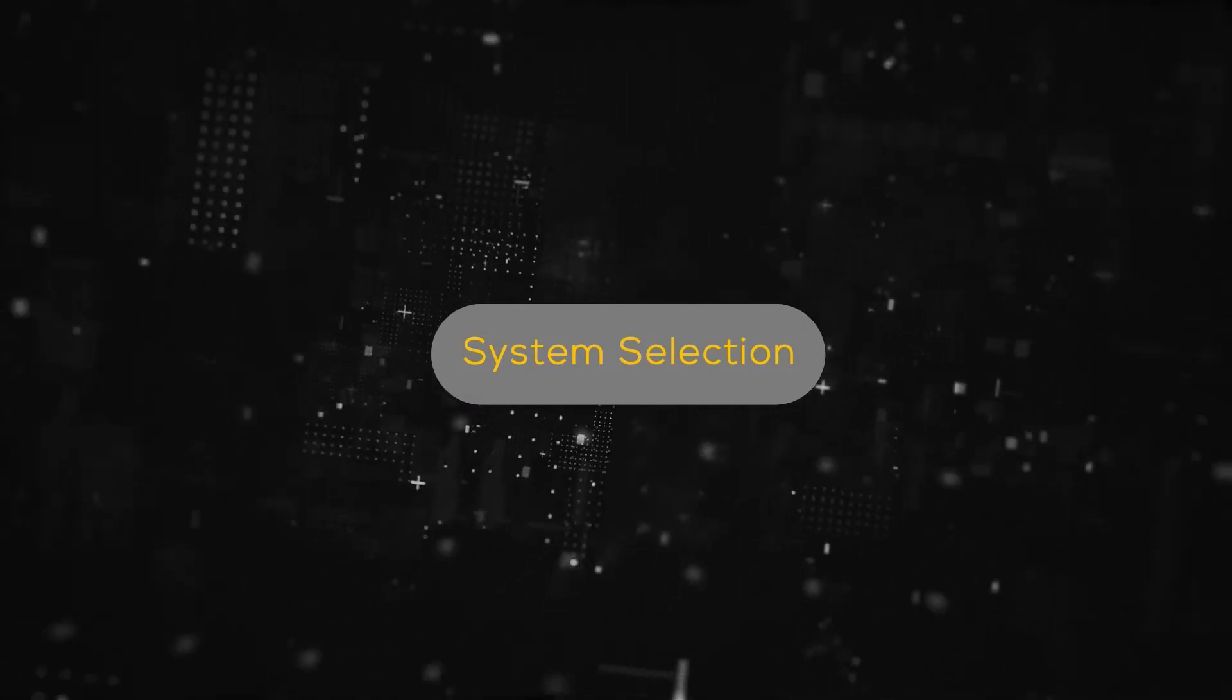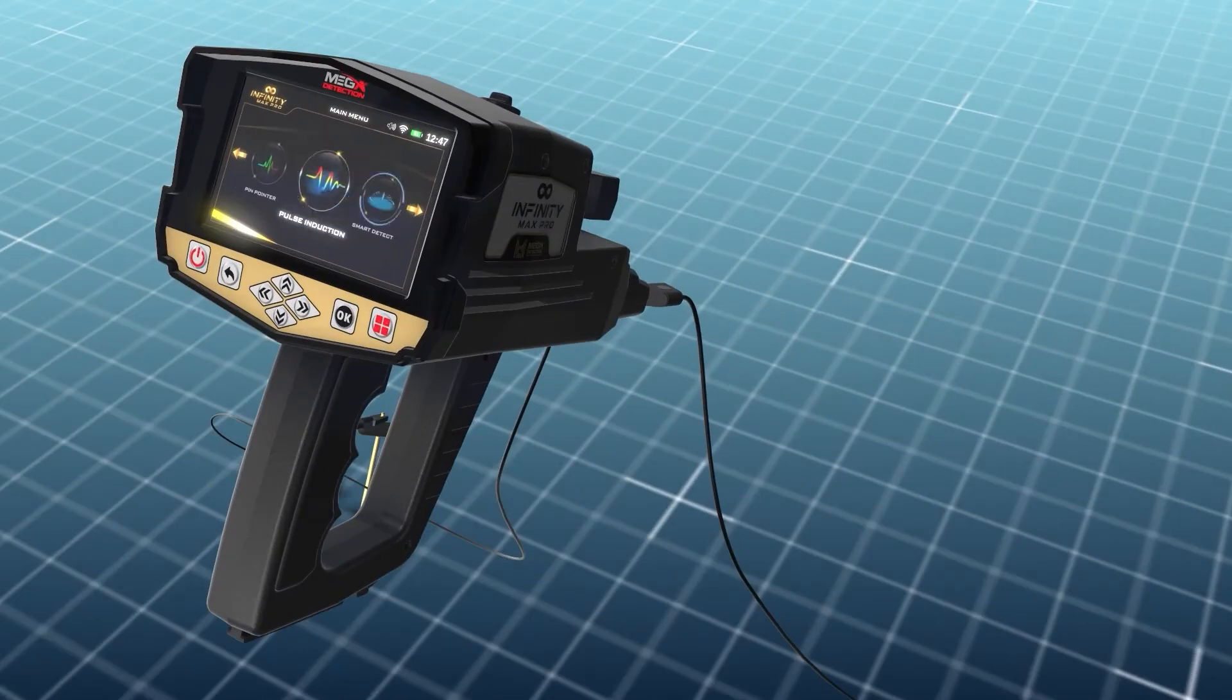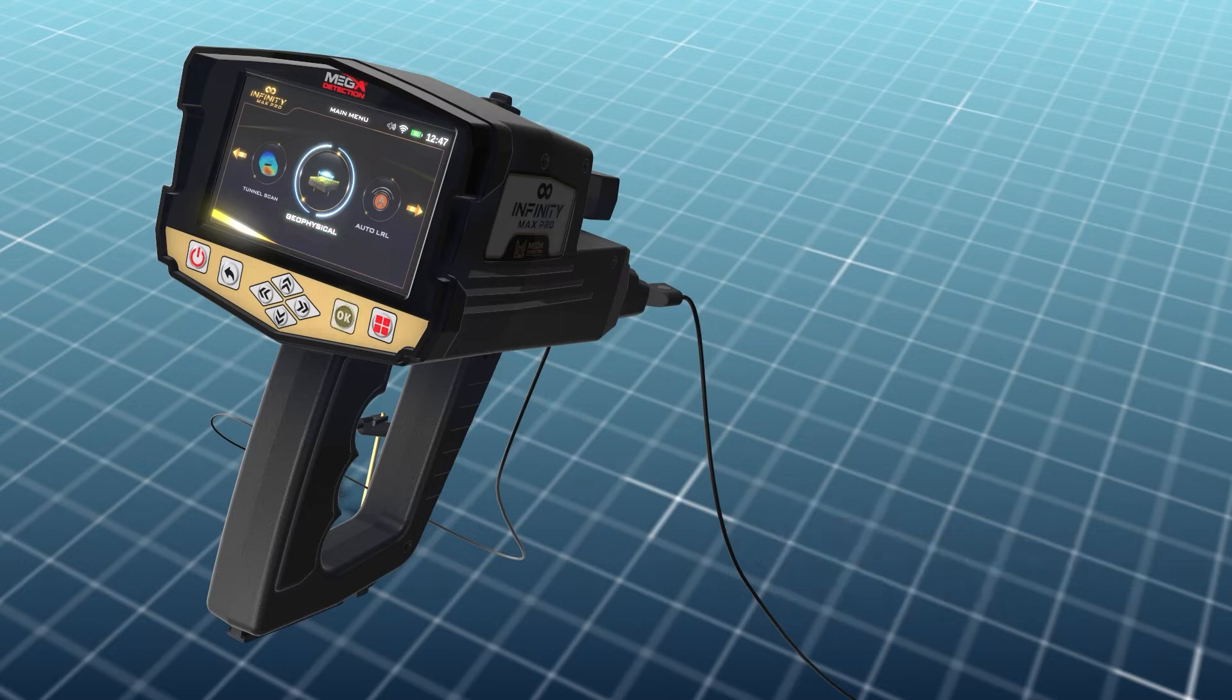System selection. Select Geophysical System. To begin, select Geophysical System from the main menu and press OK.